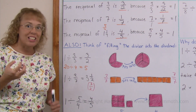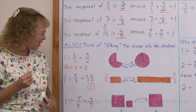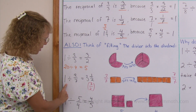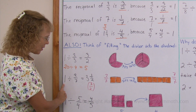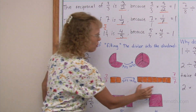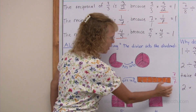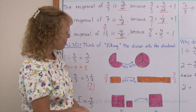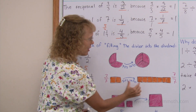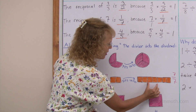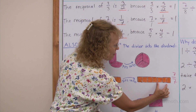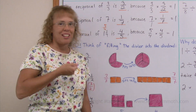We can also illustrate it visually, thinking of how many times does this fit into this. I have a picture here: 2 sevenths, and this is 1 whole or 7 sevenths. How many times does 2 sevenths fit into here? Once, a second time, a third time, and half a time — 3 and a half times.